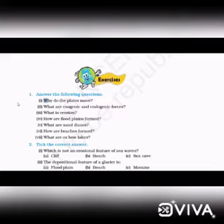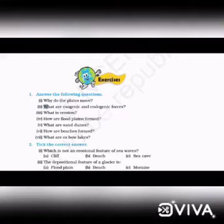Then, let's discuss some questions and answers from this chapter. First question: which is not an erosion feature — sea cave? Answer: beach. Second question: the depositional feature of a glacier is moraines.